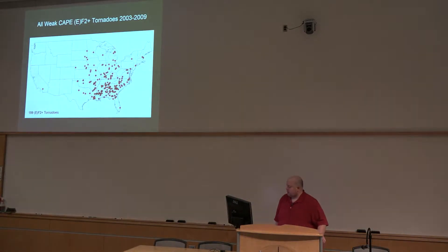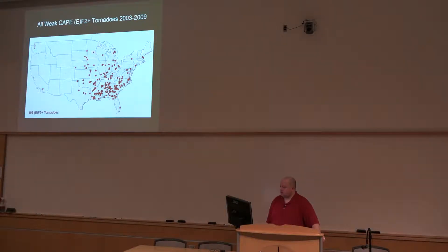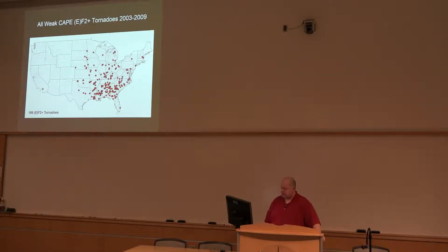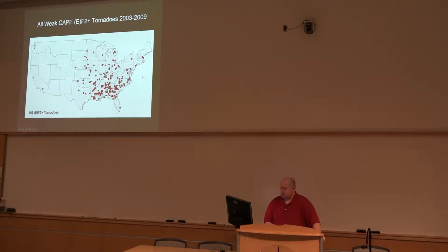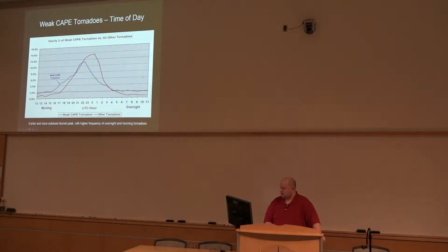Here's a plot of those tornadoes — all weak CAPE tornadoes, but specifically the stronger ones: 199 strong tornadoes. You can see the spatial distribution. There were even some cases back in the Southern Plains in Oklahoma and North Texas, but a common theme is that if you divide the CONUS into quarters, a lot of cases fall in the southeast quadrant of the United States.